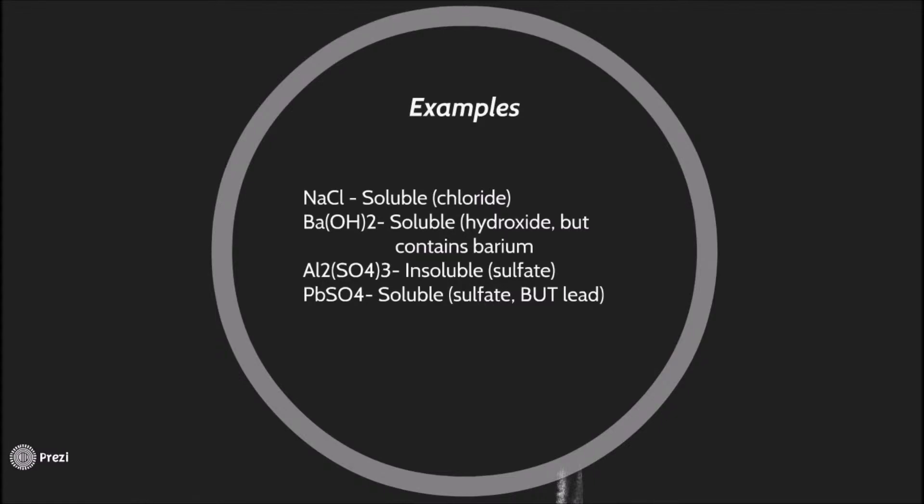Aluminum sulfate is insoluble because it is a sulfate and sulfates are insoluble. Lead sulfate is insoluble. It may contain sulfate, but it includes lead, so therefore it is soluble.